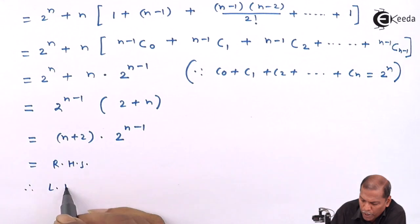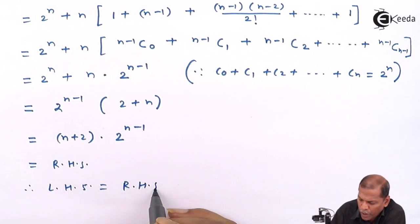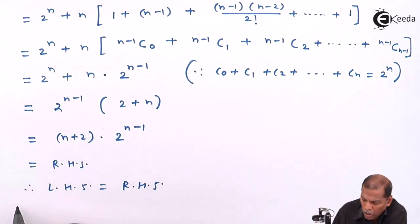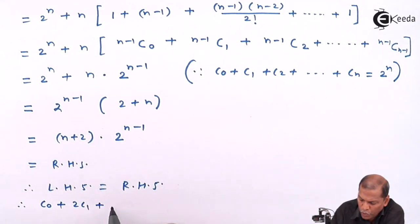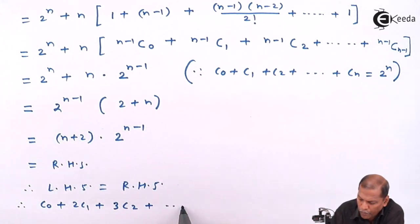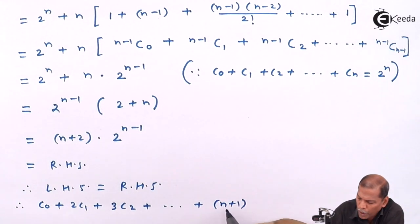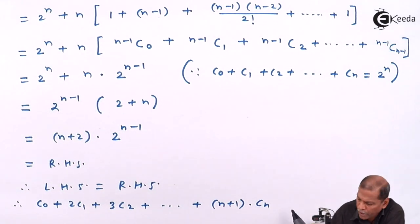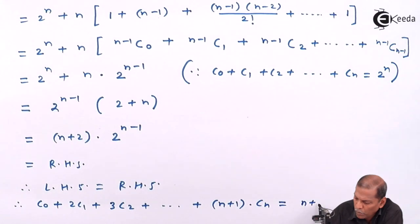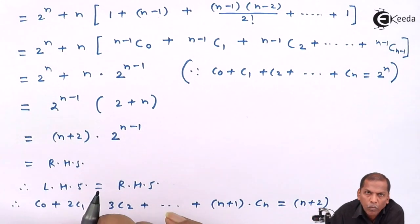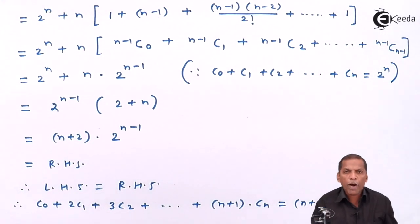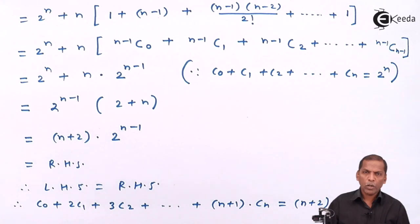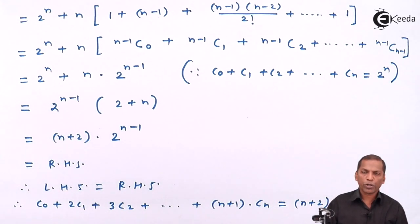That equals the right hand side. So in this way we proved left hand side equals right hand side, and therefore C₀ plus 2C₁ plus 3C₂, going on, plus (n+1)·Cₙ equals (n+2) into 2 raised to n minus 1. This is the required solution. We have now completed the chapter on Method of Induction and Binomial Distribution. Thank you.